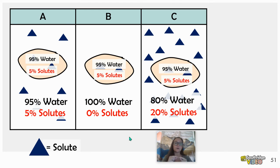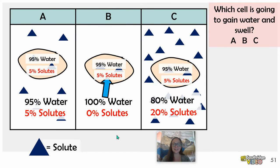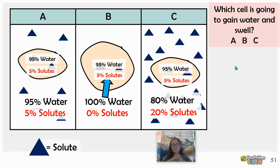Let's check ourselves. Which cell is going to gain water and swell? That is cell B — it's 100% water on the outside. So that is a hypotonic solution, and the cell is going to gain mass.